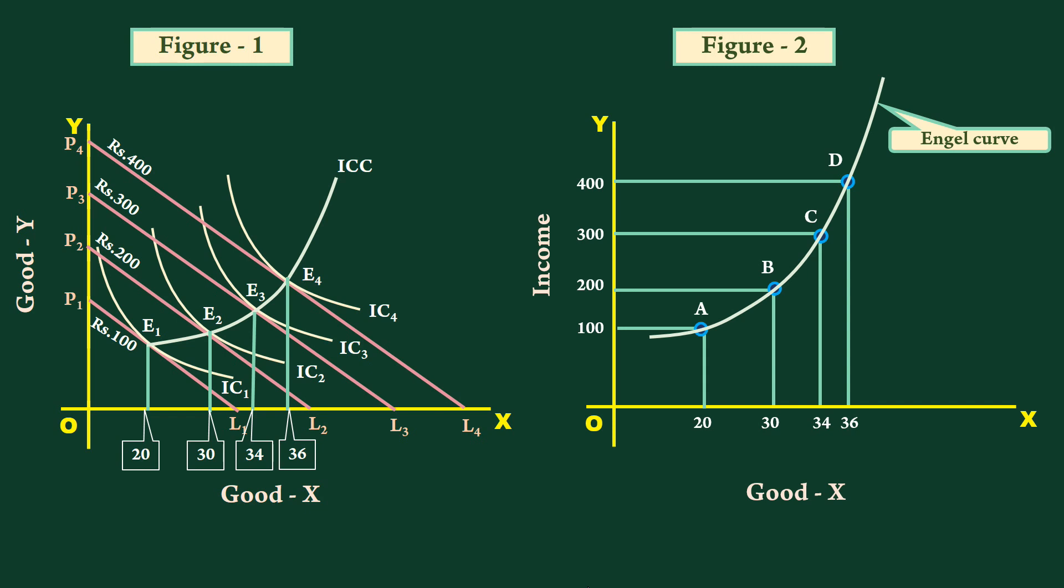The curve slopes upward and opens up. At the left extreme, its slope is less. As the consumer moves from left to right, its slope increases.